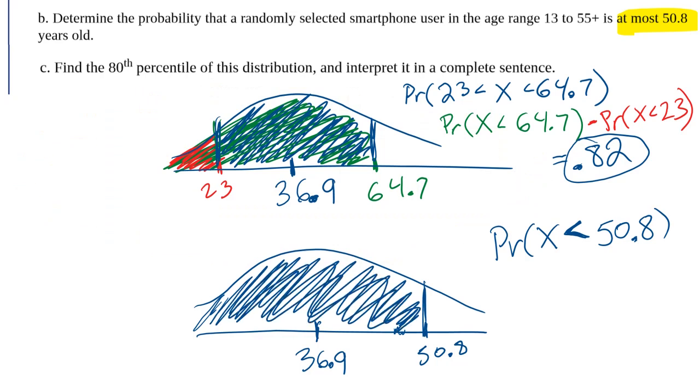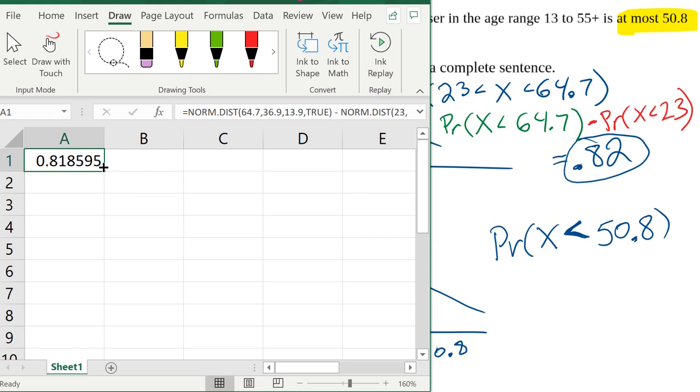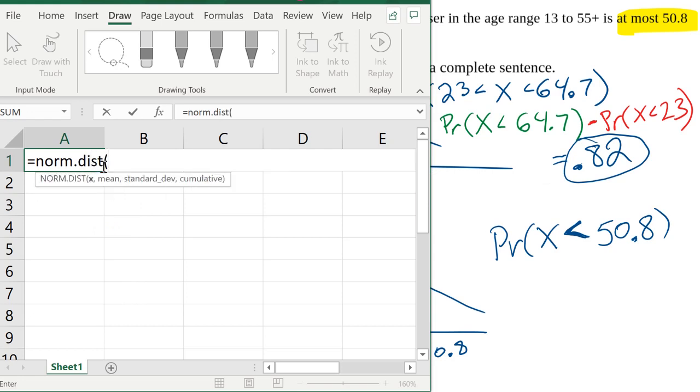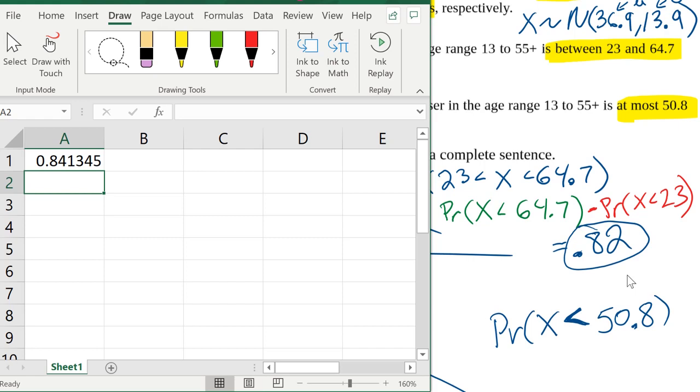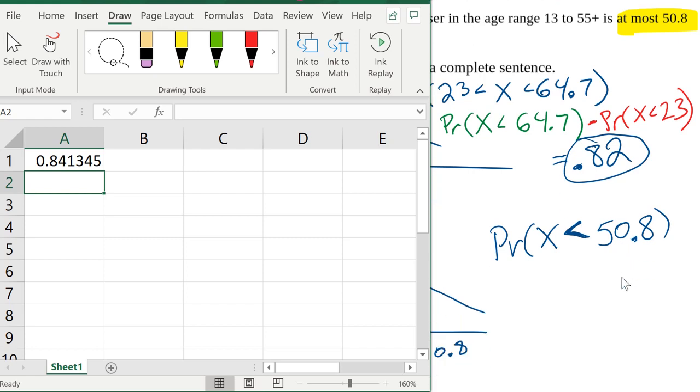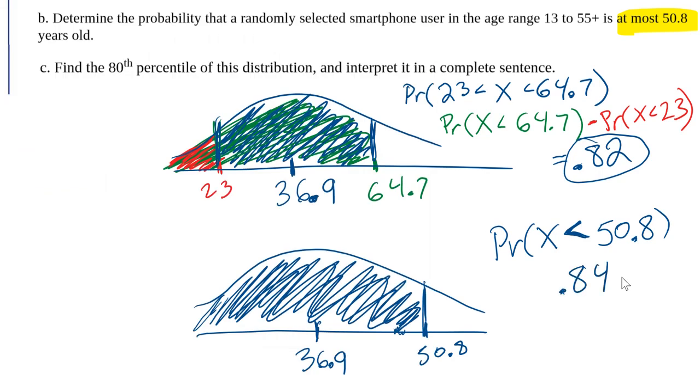I basically want to know what's this probability to the left of 50.8. That's so convenient now, right? Because that is basically a cumulative probability. Cumulative probabilities, remember, always calculate the probability to the left. So I can go into Excel and calculate this. Let me delete this. And then I'll type norm.dist, and I'll write 50.8. The mean is 36.9, and the standard deviation is 13.9. Always type true for cumulative, close parentheses, and then press enter. So there we go. If I would round that to two decimal places, 0.84. The probability that a randomly selected smartphone user is at most 50.8 years old is 0.84.